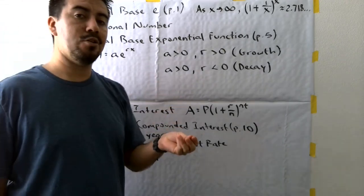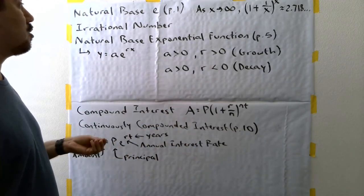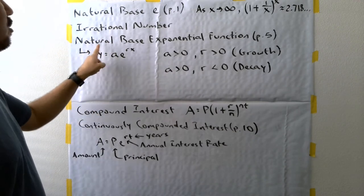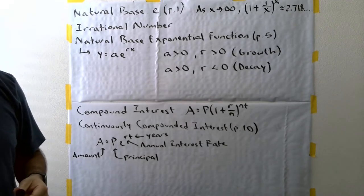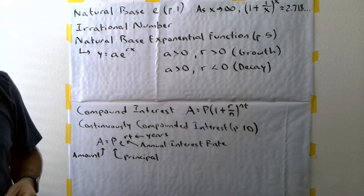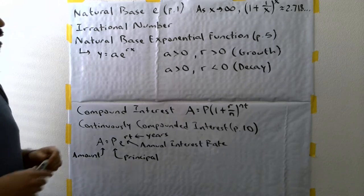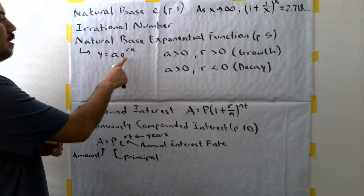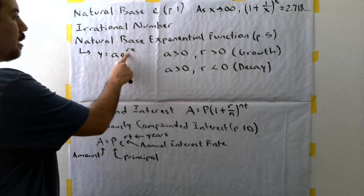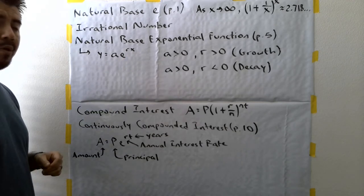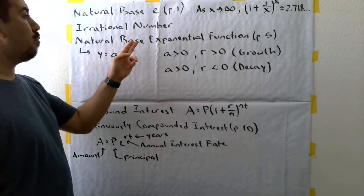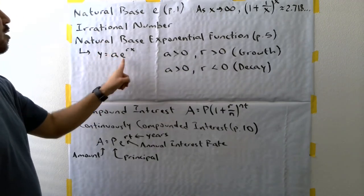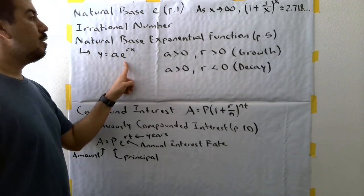We're going to be using that value in our functions all throughout this section. The next thing I want to explain to you is what is identified as a natural base exponential function. It's going to take a certain form, and I have the equation right here: Y equals A times E raised to the Rx power. Now there's two types of natural base exponential function. It's still an exponential function involving the natural base using the letter E. There's two types.